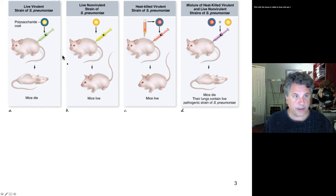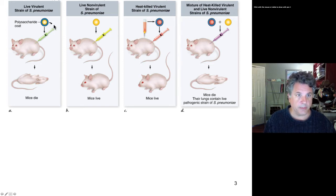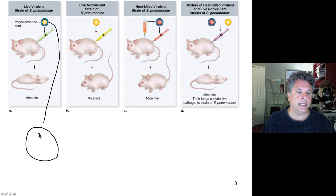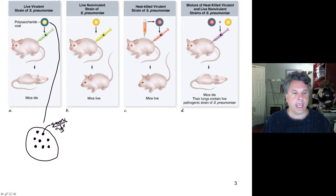When Griffith grew these bacteria in petri dishes, the colonies would form very nice smooth colonies. So there were actually two phenotypes to the strains of bacteria he was working with. One phenotype was that when grown in petri dishes, the colonies — each one started from a single bacterium — had a smooth appearance. These were called S strain bacteria. Smooth cells were also virulent in that they would mount an infection and kill mice.